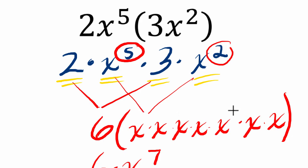A nice shortcut is that we can just add the exponents, because really these exponents count the number of multiplications. And if we have five multiplications of x by two multiplications of x, altogether, we have seven multiplications of x.